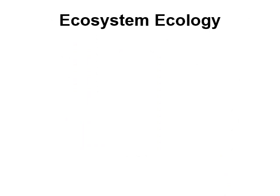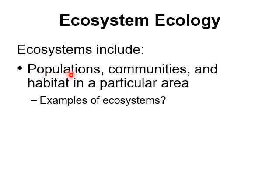The last thing I want to talk about in this marine ecology chapter is ecosystem ecology. Ecosystems include populations — individuals of the same species in the same area — multiple of which make up a community — all the living things in the area — plus the habitat, the non-living things in the area. Examples of ecosystems include coral reef ecosystems, seagrass ecosystems, salt marsh ecosystems, and giant kelp ecosystems — each defined by a particular set of living things in a particular habitat.